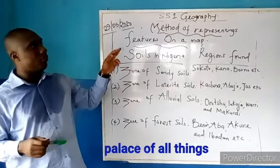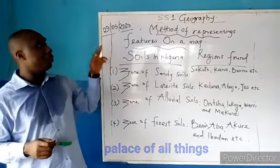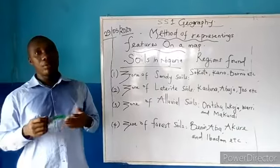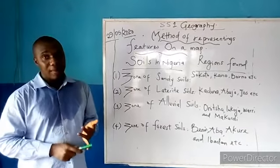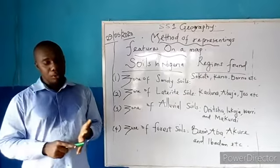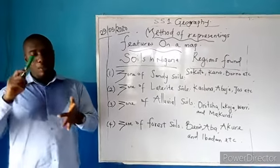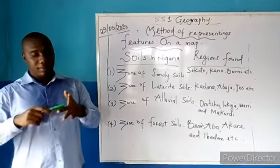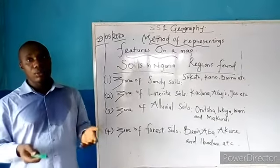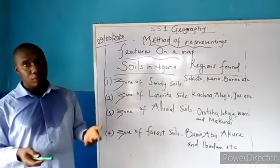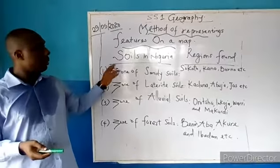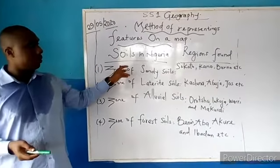This is a method of representing features on the map. We have different features like climatic features, soil features, vegetation, relief, and so on and so forth. But for today's class, we should be talking about soil.